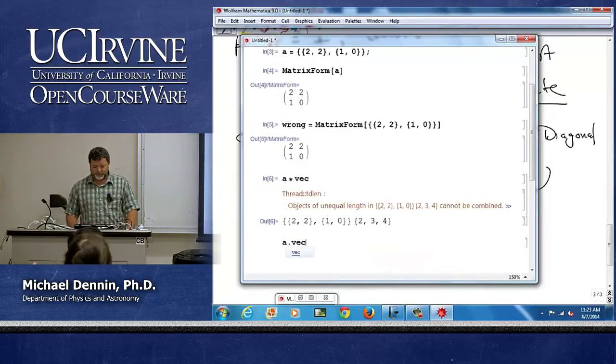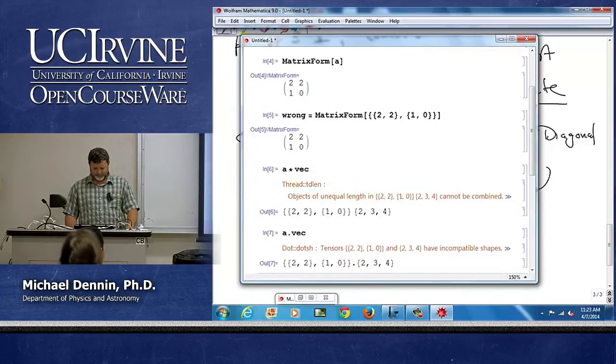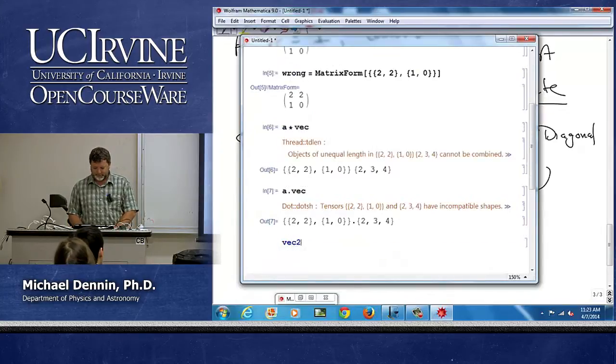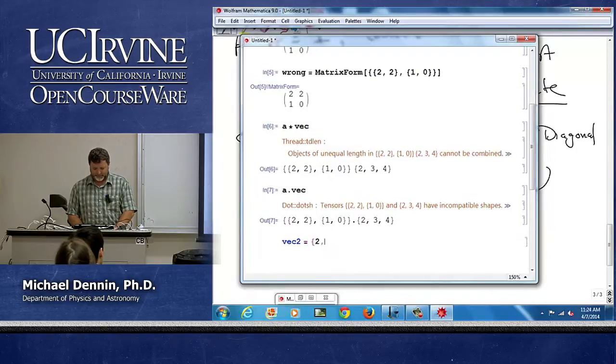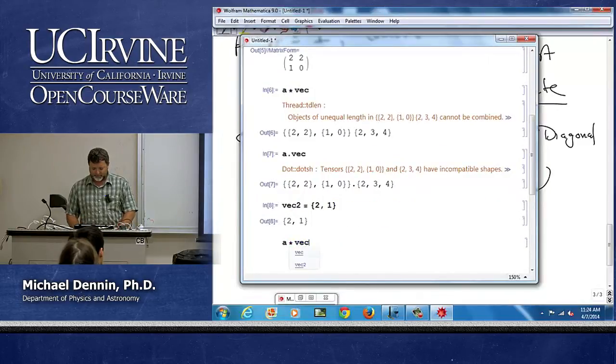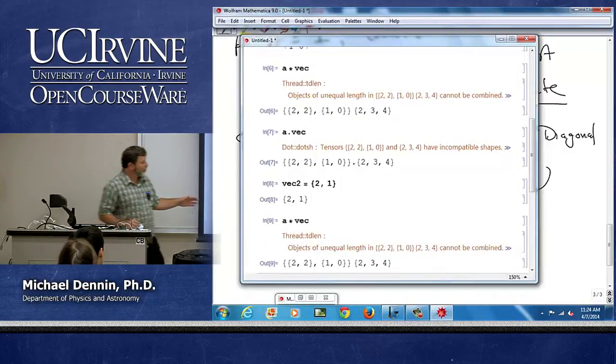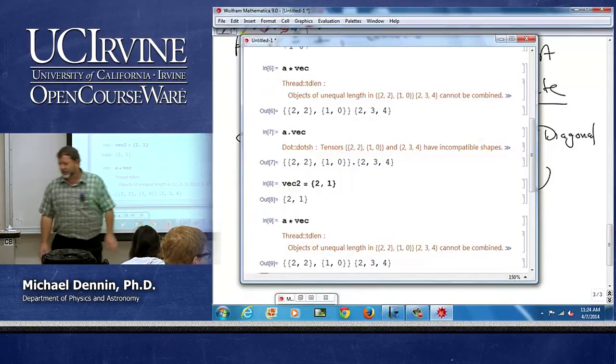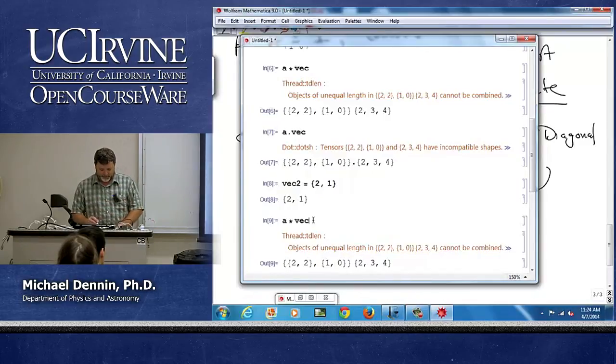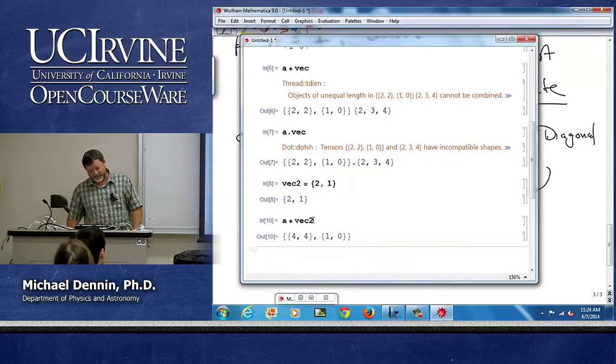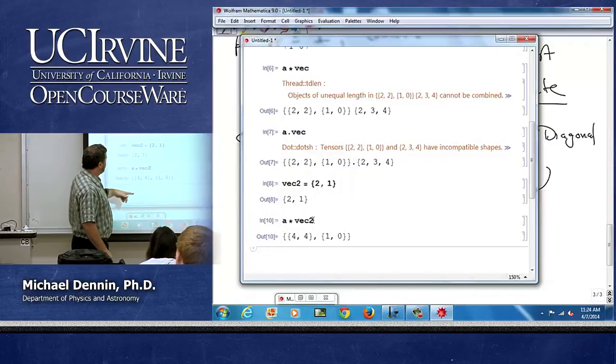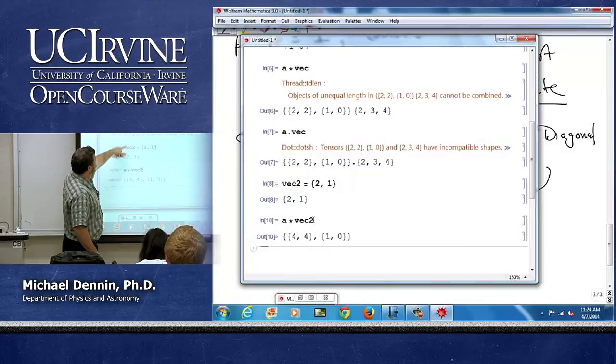But if I do A dot vector, oh, I made a 2 by 2 matrix. It's really getting upset. Let's make a new vector. Sorry about that. There's my new vector. Now let's do A times vector. It's still upset because what it's trying to do is trying to thread, which means it's trying to multiply element by element.